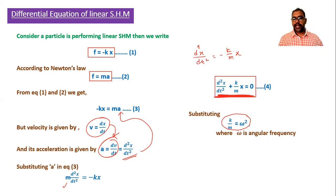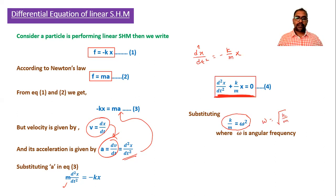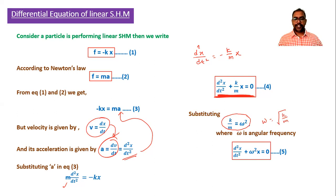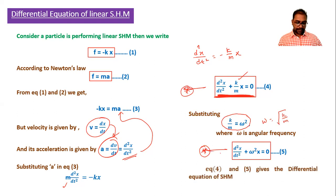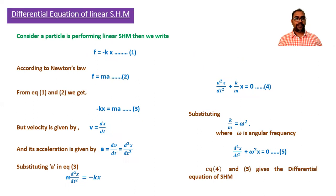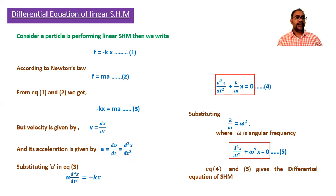Here, k/m represents ω², where ω is the angular frequency. So ω = √(k/m). Substituting, we get the differential equation in terms of ω: d²x/dt² + ω²x = 0. This is equation 5. Both equation 4 and equation 5 are differential equations of linear SHM. If the exam asks you to 'state' the differential equation, write either of these two forms.